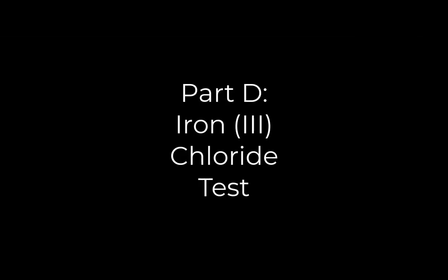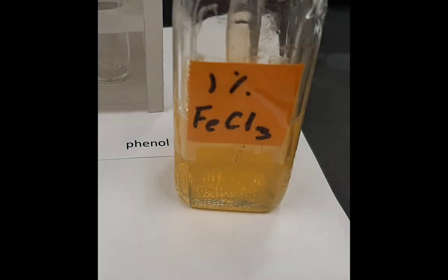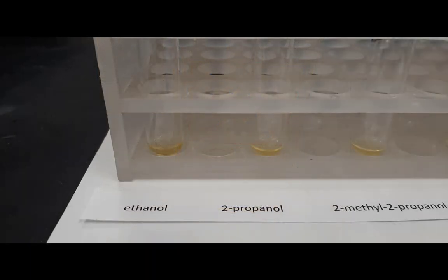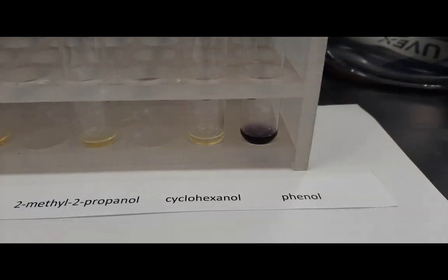Here's the iron 3+ chloride test. Here is the yellow iron 3+ chloride reagent. As before, we've added it to the three test tubes: ethanol, 2-propanol, and 2-methyl-2-propanol. The test tube on the left should look essentially the same color as the other two. Again there's 2-methyl-2-propanol, cyclohexanol, and finally phenol.